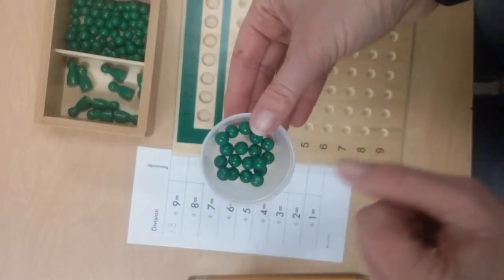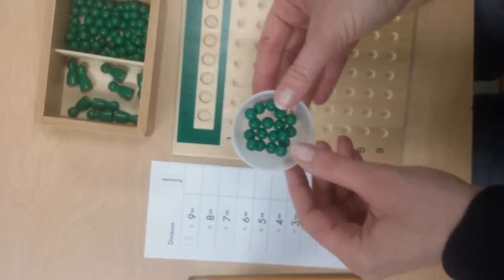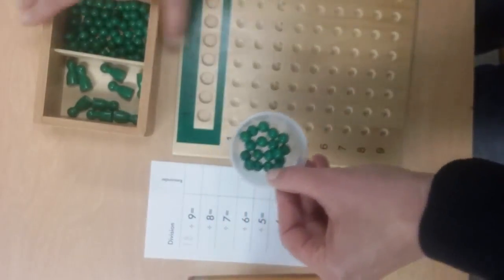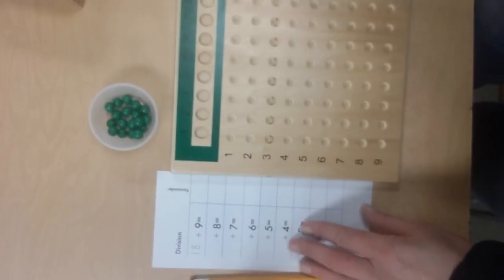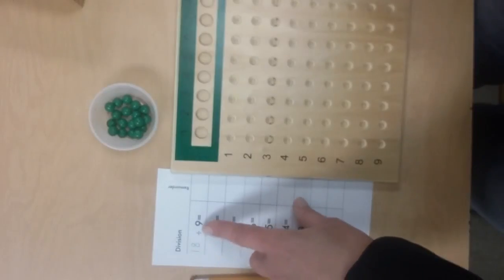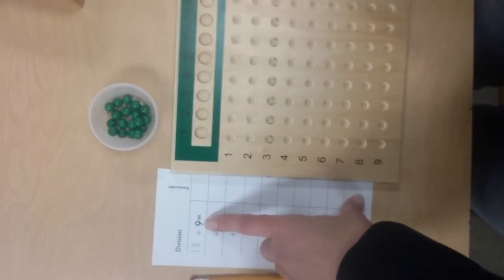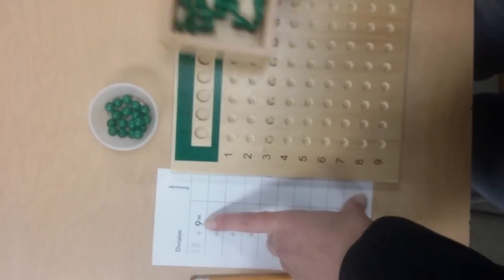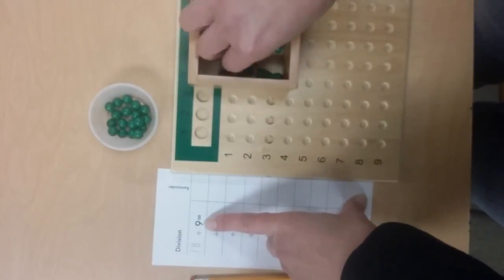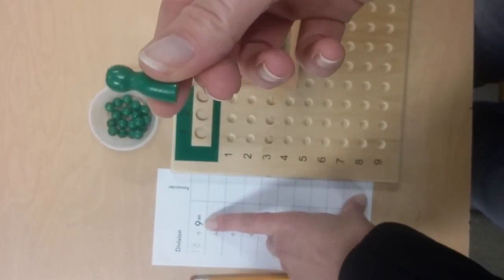You might want to have them double-check to make sure they have 18, then set the box aside and keep these in the container. Next, have the students find the divisor, which is this number. They're going to get these little things—they look like little people, but they're called skittles.